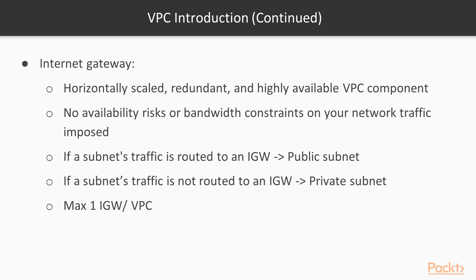The Internet Gateway is a horizontally scaled, redundant, and highly available VPC component that allows communication between instances in your VPC and the internet. Because it is managed by AWS, you won't have any availability risks or bandwidth constraints on your network traffic. If you route a subnet's traffic via an Internet Gateway, that subnet is considered a public subnet. If a subnet's traffic is not routed to an Internet Gateway, it's a private subnet. You can have a maximum of one Internet Gateway per VPC.